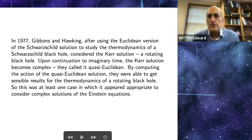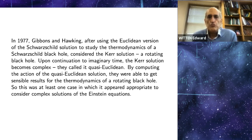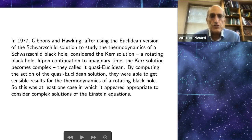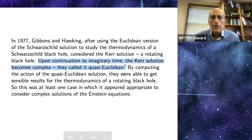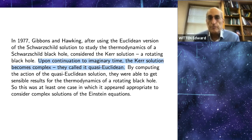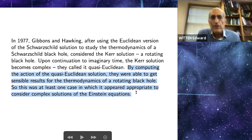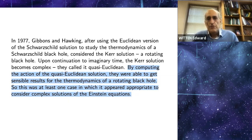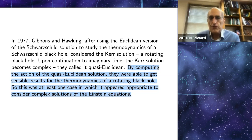Way back in 1977, in the early days of black hole thermodynamics, Gibbons and Hawking first studied the Schwarzschild solution in Euclidean signature to study its thermodynamics, and then they considered a rotating black hole, the Kerr solution. The Kerr solution was different from Schwarzschild because when they continued to imaginary time, the Kerr solution becomes complex. They called it a quasi-Euclidean metric. But they showed they could get sensible results from this complex metric by computing the action of the quasi-Euclidean solution, getting sensible results from the thermodynamics of a rotating black hole. So that was at least one case in which it appeared appropriate to consider complex solutions of the Einstein equations.